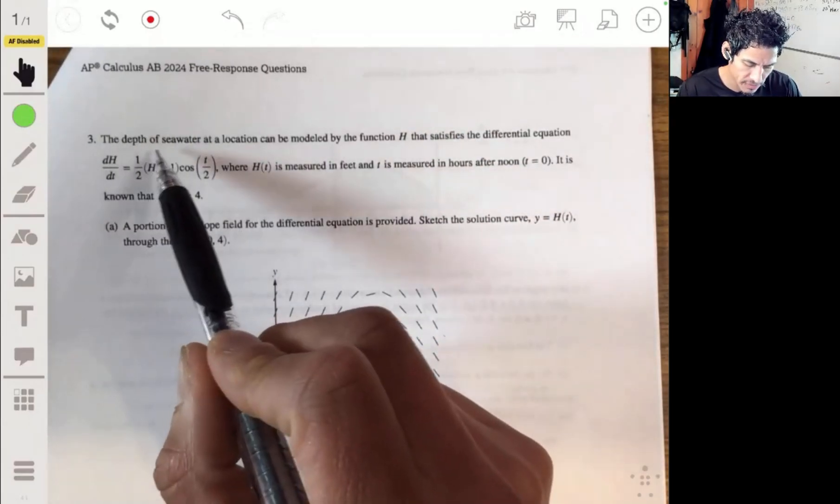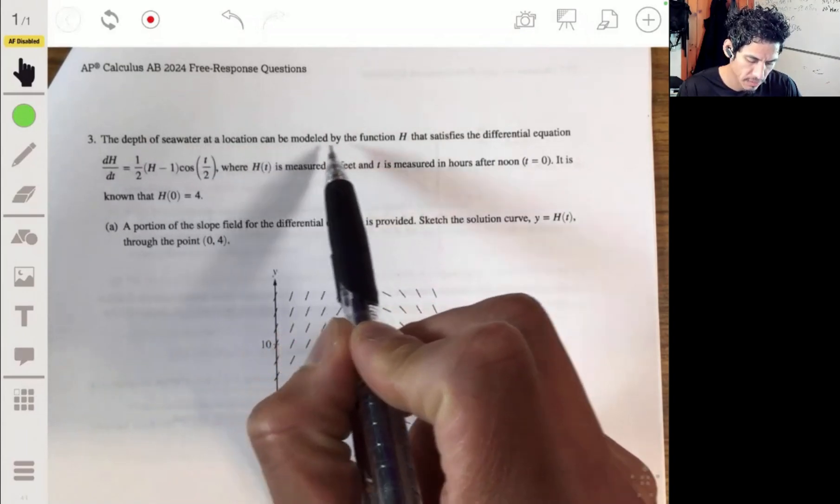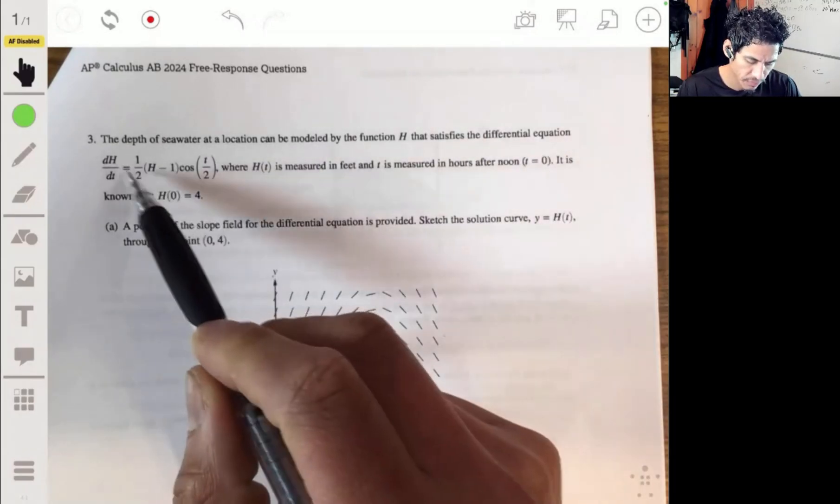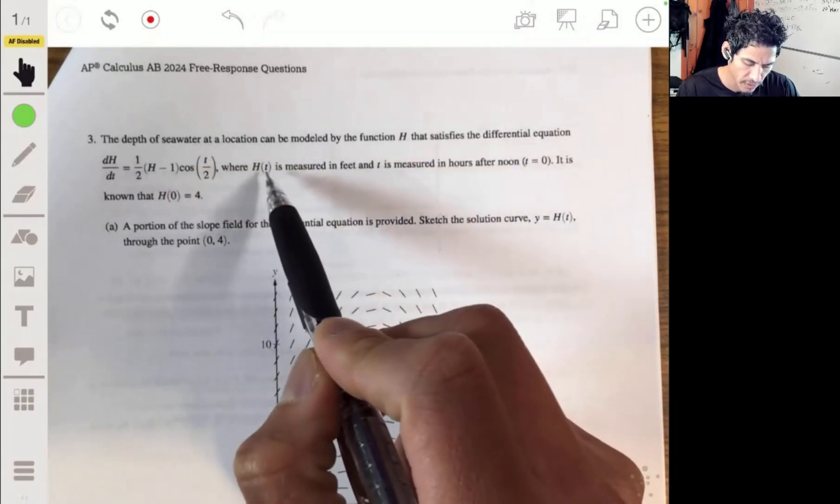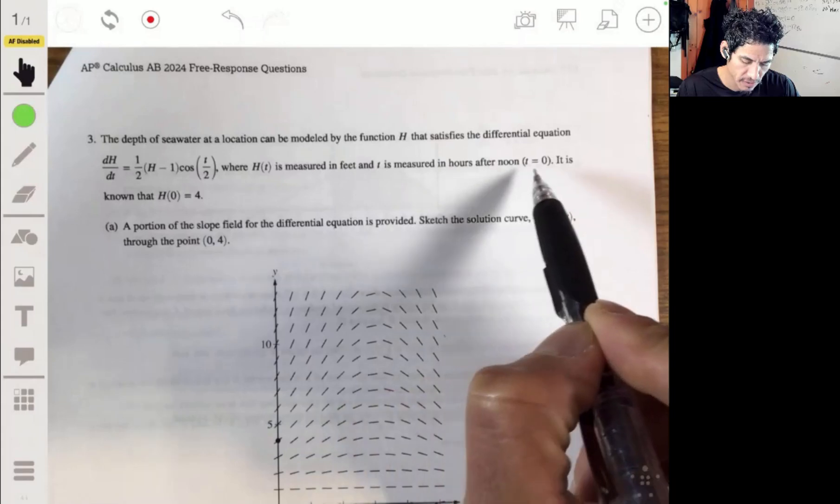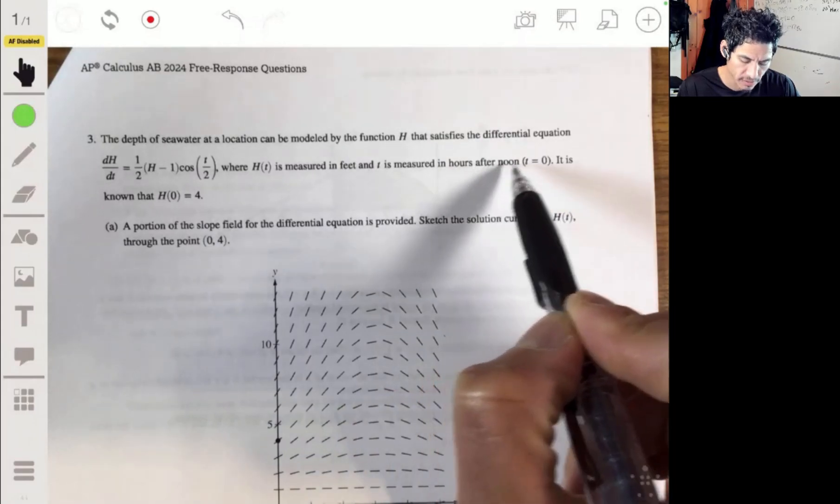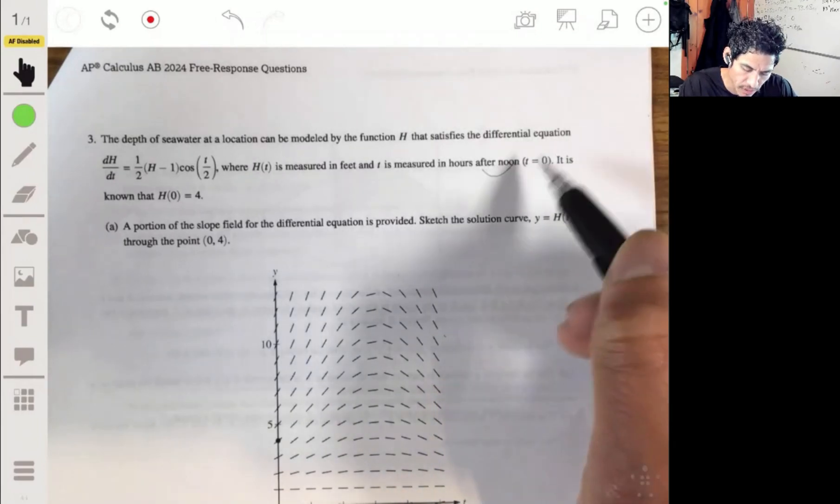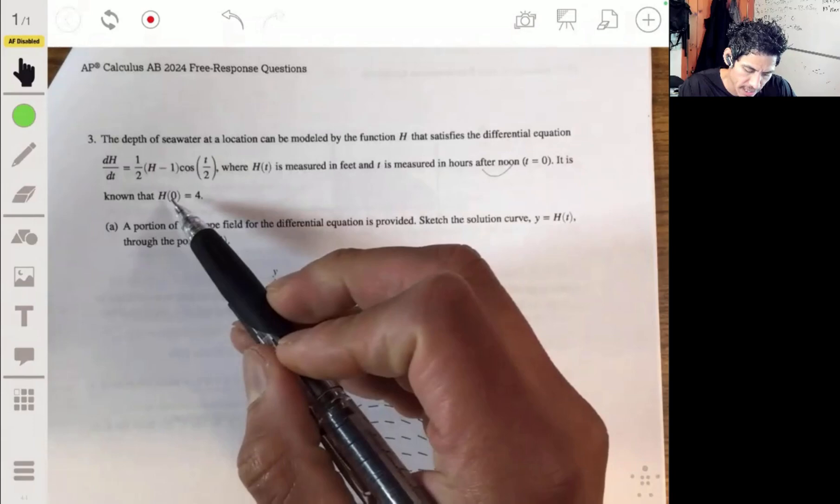So here we got the depth of seawater at a location can be modeled by the function h that satisfies the differential equation, this, where h is measured in feet and t is measured in hours after noon, literally afternoon. So that's interesting. That's funny. So it is known that h of zero equals four.